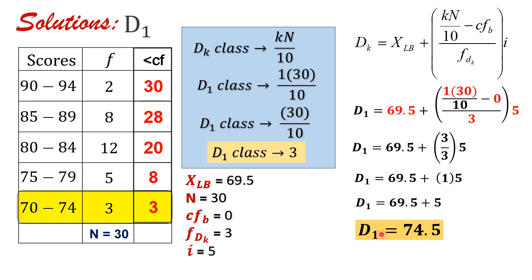If you are in doubt, you may refer to our previous video lesson where I provided the same data and we looked for P of 10 — we got 74.5 there as well. Recall that decile 1 is equivalent to P of 10, decile 2 is equivalent to P of 20, and so on. Since D1 equals P10, and we confirmed the same answer of 74.5 using the same frequency distribution table, therefore it's correct.